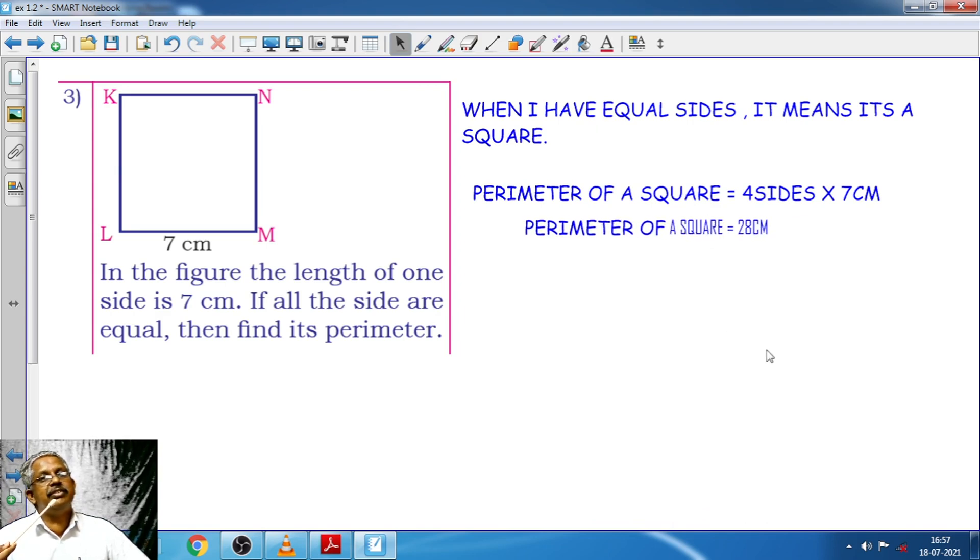So this is going to be your sum. The unknown side is given. Unknown sides, we try to find it. If all the sides are equal then find its perimeter. That is what the question they have asked here.